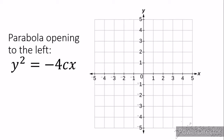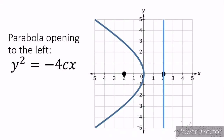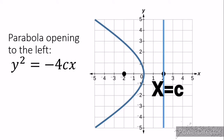Let's proceed to the next feature — a parabola opening to the left. The equation is y squared is equal to negative 4cx. The difference is: opening to the right uses positive 4cx, while opening to the left uses negative 4cx. When graphed, the focus is located at the left side, and the directrix is located at the right side.